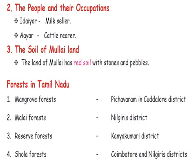Shining round stones are called pebbles. Mullai land's other name is Sembulam, meaning the land with red soil. Mullai land is famous for its forests. The forests in Tamil Nadu include the Mangrove forest found in Pichavaram in Cuddalore district, Male forest in the Nilgiris district, Reserve forest in Kanyakumari district, and Shola forest in Coimbatore and Nilgiris district.